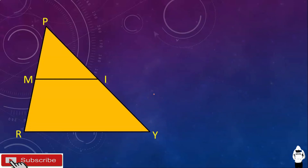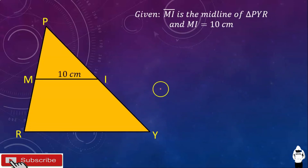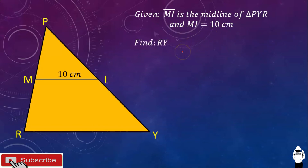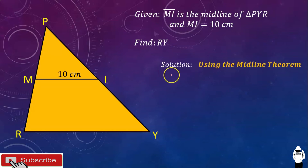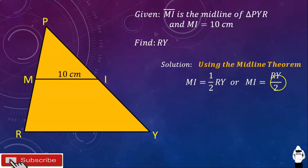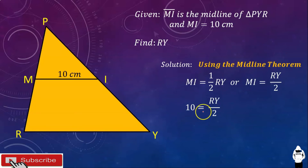Let's have another example using the same figure. Given that MI is the midline of triangle PYR and MI is equal to 10 centimeters, find RY. Using the midline theorem, MI is equal to RY over 2. Substituting the value of MI, we have 10 is equal to RY over 2. By using the Multiplication Property of Equality, RY is equal to 20 centimeters.